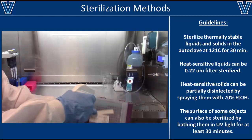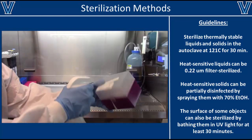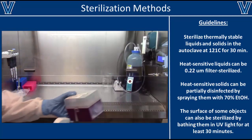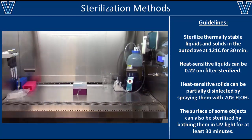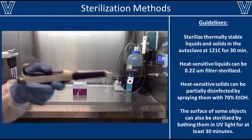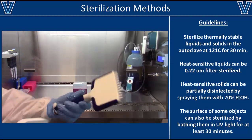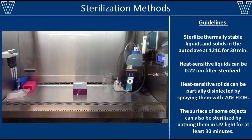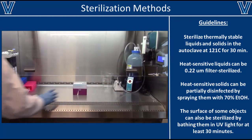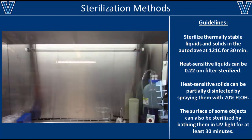Another way to sterilize solids is to spray their surfaces with ethanol. This is a pretty effective technique for pipette tip boxes and pipettes, but always remember that ethanol only sterilizes the surface of materials — it does not sterilize their insides.